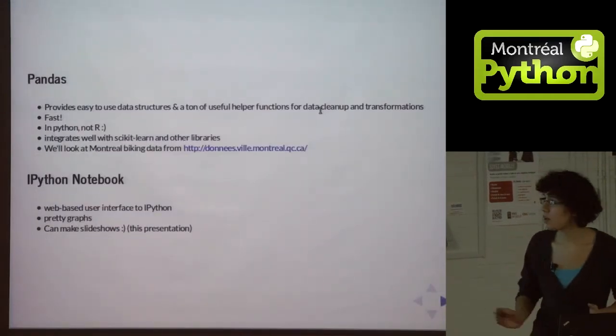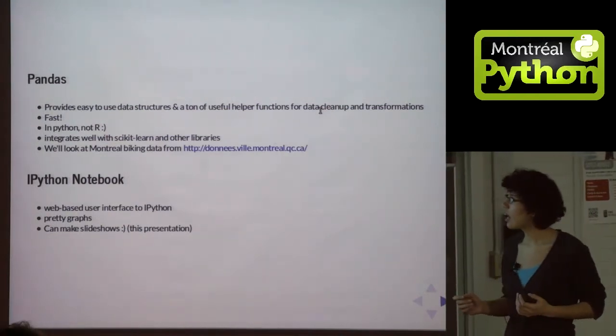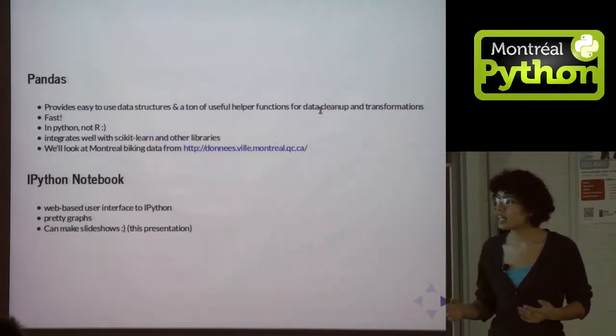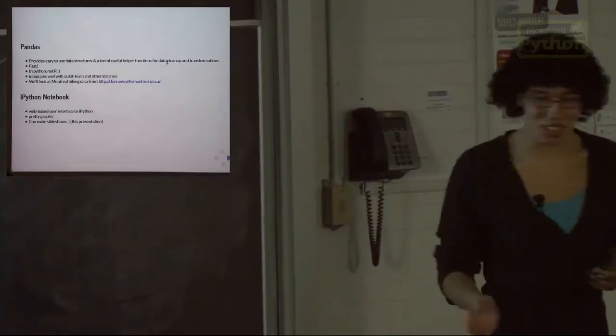So I'm going to walk through an example of using Pandas to analyze some data about how many people are biking on the bike paths in Montreal. So right now, not too many, but in the summer there will be more.